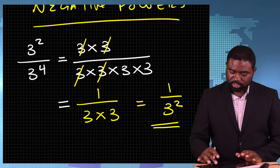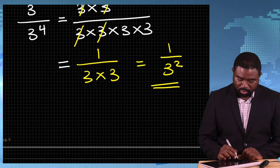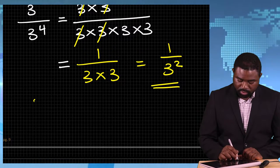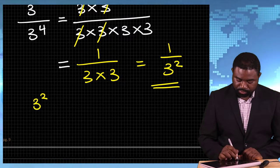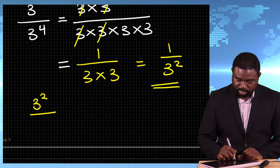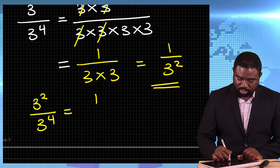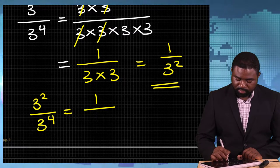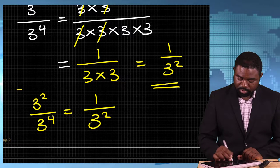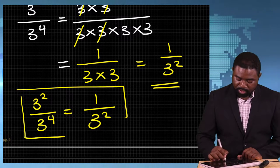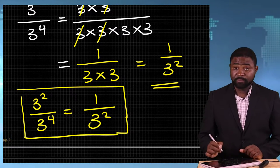So essentially, we have shown that 3 raised to the power 2 divided by 3 raised to the power 4 is equal to 1 divided by 3 raised to the power 2. Keep this in mind.